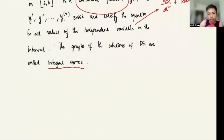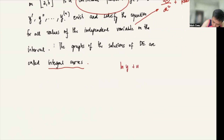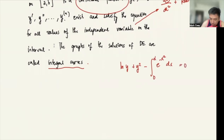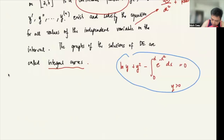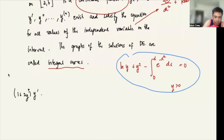These integral curves are a representation or family of curves representing those solutions. Before we dig in further with the solution to differential equations, let us consider this intuition: ln of y plus y squared minus the integral of e to the negative x squared dx evaluated from 0 to x equals 0, where y is greater than 0. This expression is actually a solution to the differential equation: (1 + 2y²)y′ − y·e^(−x²) = 0.